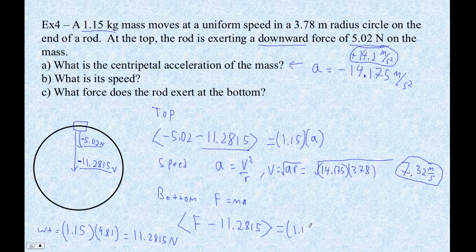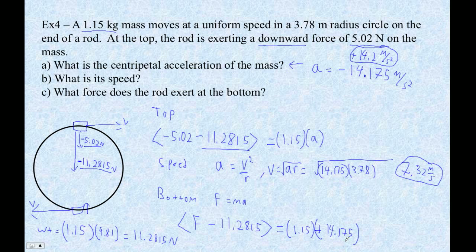At the bottom, you're actually accelerating toward the middle — which is upward. At the top you're accelerating down; at the bottom you're accelerating up. So it's positive 14.175. So we get 1.15 times 14.175 plus 11.2815, and I get 27.58, so that rounds to 27.6 newtons. The fact that it's positive means it's upward. Ta-da.